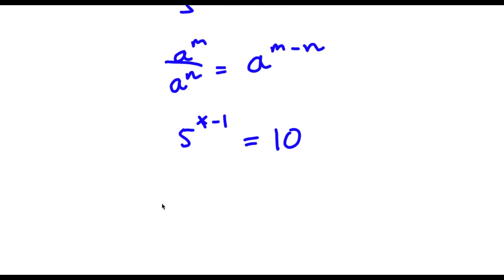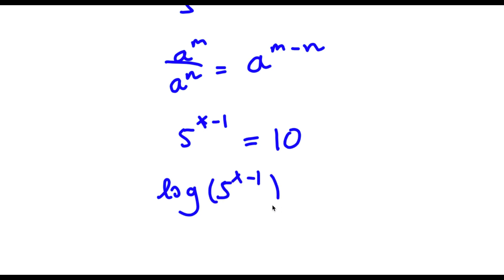Now I'm going to go ahead and take the log on both sides. So now I have log 5 to the power of x minus 1 is equal to log 10.